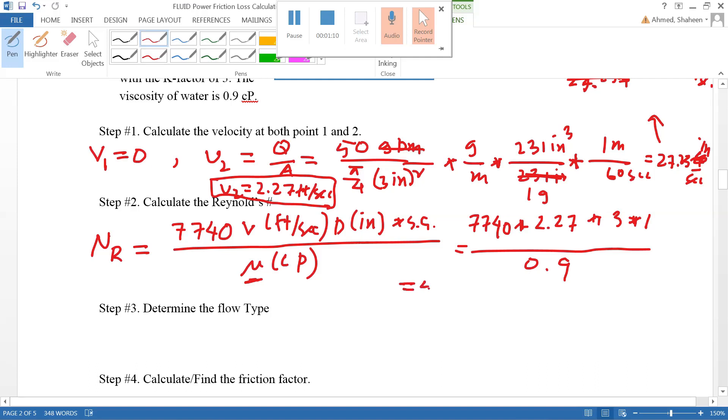58,551, which is greater than 4000. So it says determine the flow type.